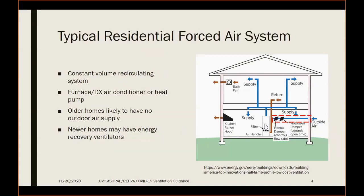In terms of the types of systems addressed, the typical residential system in North America is a forced air system, constant volume with a lot of recirculation, typically heating and cooling done by a furnace — maybe a gas furnace with a DX air conditioner or a heat pump. In older homes there's no mechanical ventilation, so we depend on natural ventilation, opening of windows and doors to bring in outdoor air, although newer homes are starting to have energy recovery ventilator outdoor air supplies.